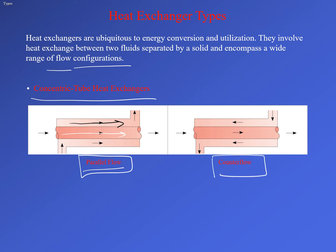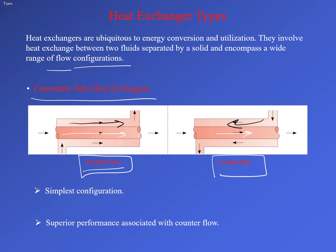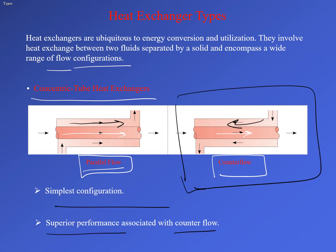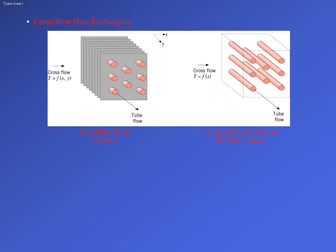The second subtype is counter flow, where the hot and cold fluids move in opposite directions. The hot fluid goes from left to right and gets colder, while the cold fluid goes from right to left and gets warmer. In concentric tube heat exchangers, the simplest configuration, we typically get superior performance with counter flow.